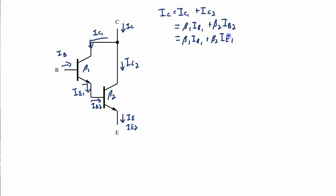And if I expand IE1 out to IB plus IC1, this is beta 1 IB1, which is the same as IB. I'll label it IB over here. Plus beta 2 times IB1 plus IC1.